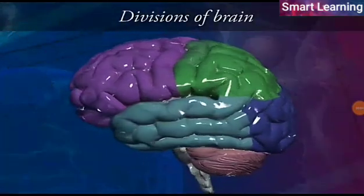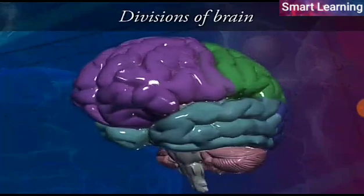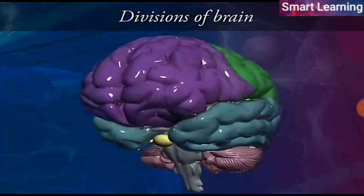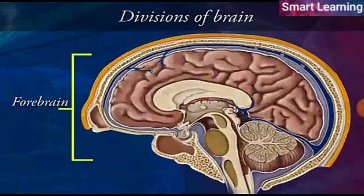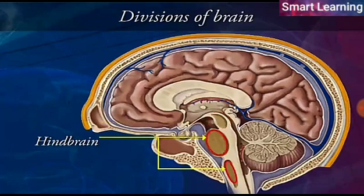The brain is divided into three main regions: forebrain, midbrain, and hindbrain.